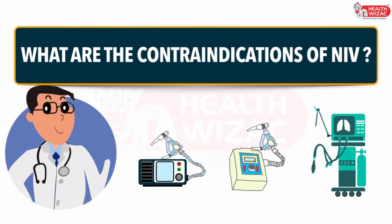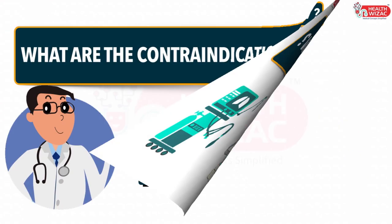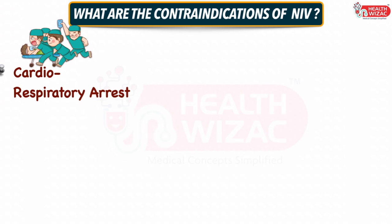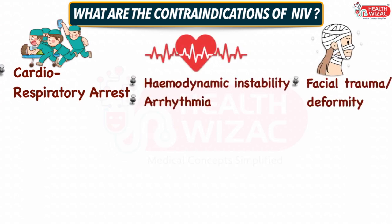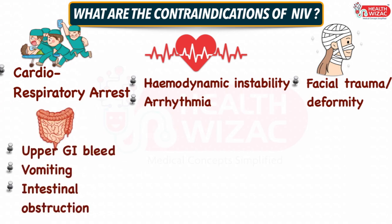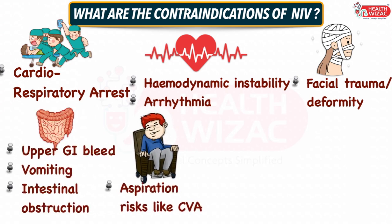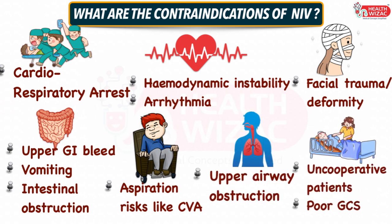What are the contraindications of NIV? NIV is contraindicated in clinical conditions like cardiorespiratory arrest, hemodynamic instability or arrhythmias, facial trauma and deformities, conditions involving risk of aspiration like upper GI bleed, vomiting, intestinal obstruction, and cerebrovascular accidents. Apart from this, it is also contraindicated in upper airway obstruction, uncooperative patients, and patients with poor GCS.